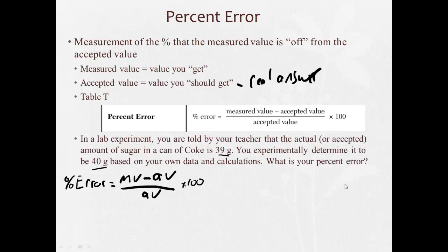So my variables here, I have measured value, I have accepted value. My measured value, what I measured it to be, is 40 grams. My accepted value is 39 grams. And my percent error is what I'm trying to find. So now I'm ready to plug these in.